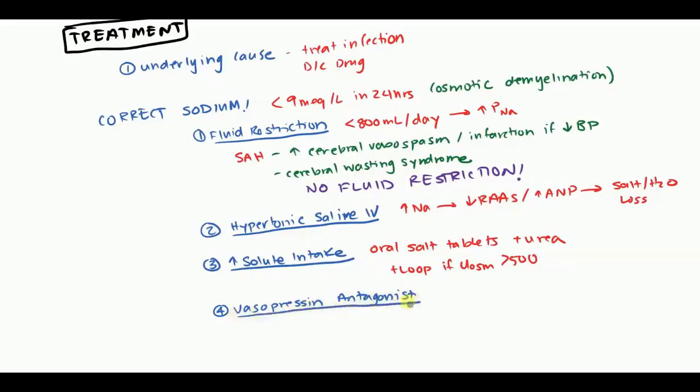And this is two drugs, tolvaptan, which acts on the V2 receptor, and conivaptan, which works on the V2 and the V1A receptor. So less specific, but still works.